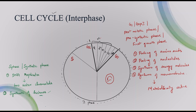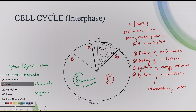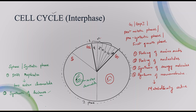Let me draw the cell in the S phase. As I told you, the DNA gets duplicated. There are two sister chromatids — here is one chromatid and this one is another chromatid. These are the sister chromatids. Now let us enter into the G2 phase.